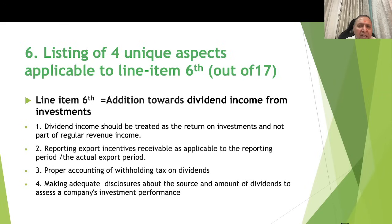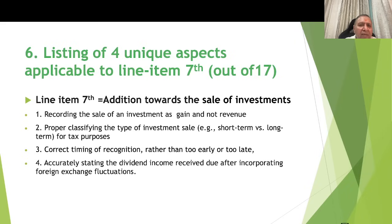For line item 6 — addition towards dividend income from investments — dividend income should be treated as a return on investments and not as part of regular revenue. Key aspects include reporting export incentives receivable in the applicable reporting period, proper accounting for withholding tax on dividends received, and making adequate disclosures about the source and amount of dividends to assess the company's investment performance. For line item 7 — addition towards sale of investments — four aspects apply: recording the sale as a gain and not revenue; properly classifying the type of investment sold as short-term or long-term for tax purposes; correct timing of recognition; and accurately stating dividend income received after incorporating foreign exchange fluctuations.